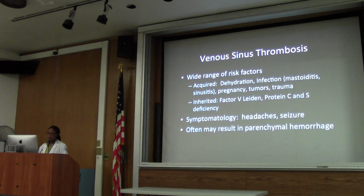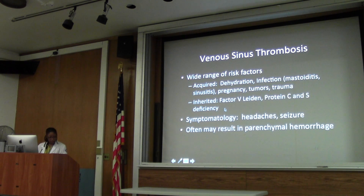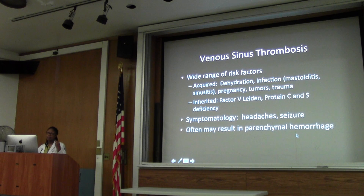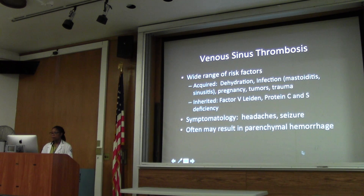There are a lot of reasons for venous sinus thrombosis. Acquired causes can include pregnancy, some kind of hypercoagulable condition, dehydration, tumors, trauma. If the patient has any coagulation deficiencies or issues, they can cause it. Patients tend to come in with headaches and seizures. These lead to venous infarcts, which eventually cause large peripheral hemorrhages. So it's an important entity to be familiar with.